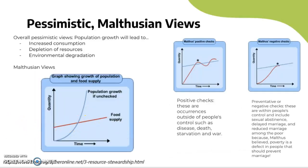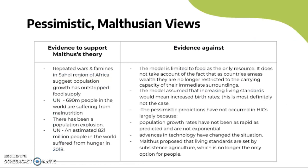Against Malthus: the model is limited to food as the only resource and does not take into account that as countries accumulate wealth, they are no longer restricted to the carrying capacity of their immediate surroundings — they can import food and develop new technologies to increase food production. The model assumes increasing living standards will mean decreased birth rates, which is not necessarily the case. Population growth rates have not been as rapid as predicted and are not exponential. Advances in technology have changed the situation, and Malthus proposed that living standards are set by subsistence culture, which is no longer the only option for many people.